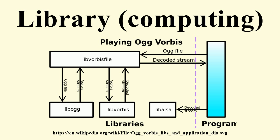In retrospect, another major contributor to the modern library concept came in the form of the sub-program innovation of FORTRAN. FORTRAN sub-programs can be compiled independently of each other, but the compiler lacks a linker, so prior to the introduction of modules in FORTRAN 90, type-checking between FORTRAN sub-programs was impossible.